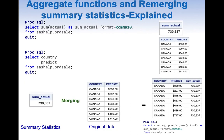Before explaining re-merging summary statistics, I want to clarify that whenever we apply an aggregate function, the result we get is known as summary statistics. Re-merging summary statistics happens in two steps. In the first step, just the aggregate function in the SELECT works and it gives us the result as shown here.